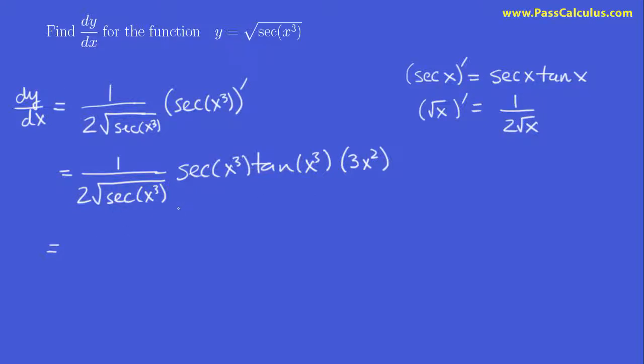Why don't we just write this as a single fraction? So we'll write 3x squared. Let's put the 3x squared in front, it looks better. And then we have our secant x cubed. We don't really need those brackets. It's fine like that. All over 2 times the root of secant x cubed. And that's our answer.